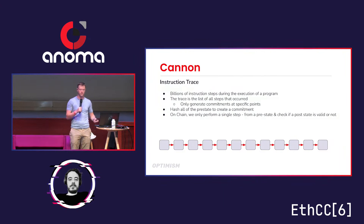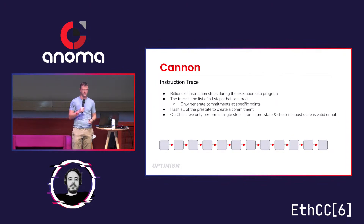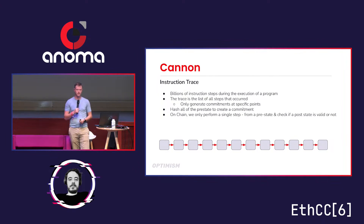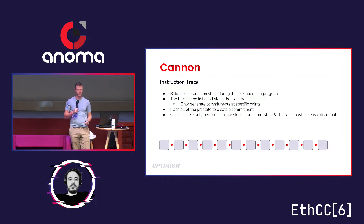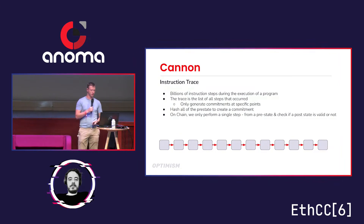We get information at specific points and do a bisection over this instruction trace — that's the core of the dispute game. What lets us scale really easily is that we can have a very long instruction trace but a relatively small number of rounds on-chain, so we're not doing all of this computation on-chain.